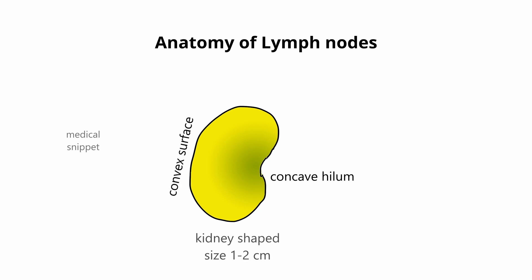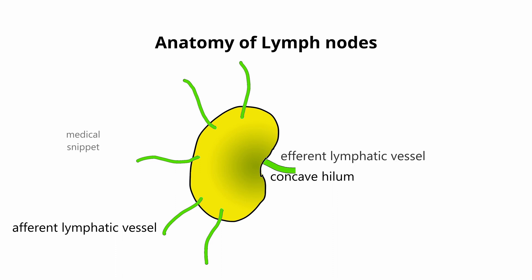The convex surface receives multiple afferent lymphatic vessels. After the filtration of lymph in the lymph node, the lymph exits the lymph node via one or two efferent lymphatic vessels at the concave hilum.